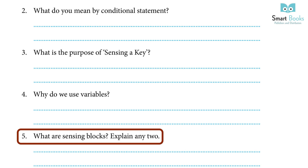5. What are sensing blocks? Explain any two. Answer: Sensing blocks are used to recognize and quantify the interaction between items in a project or to track specific mouse and keyboard motion. It is color-coded blue and is one of the nine blocks.